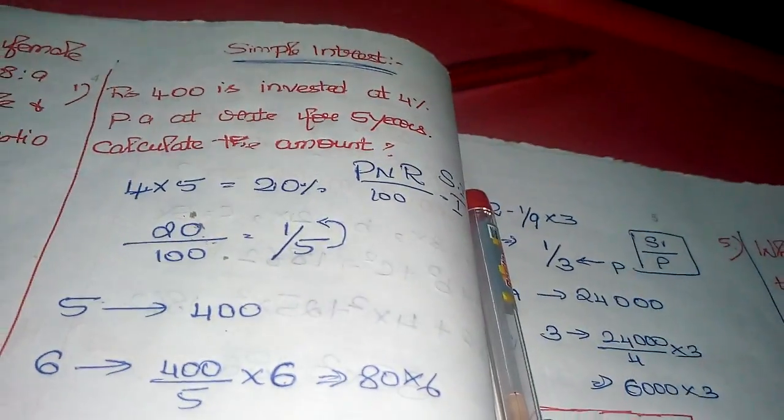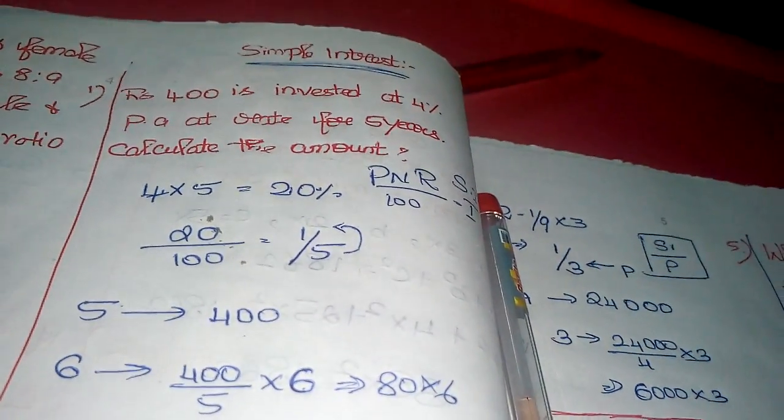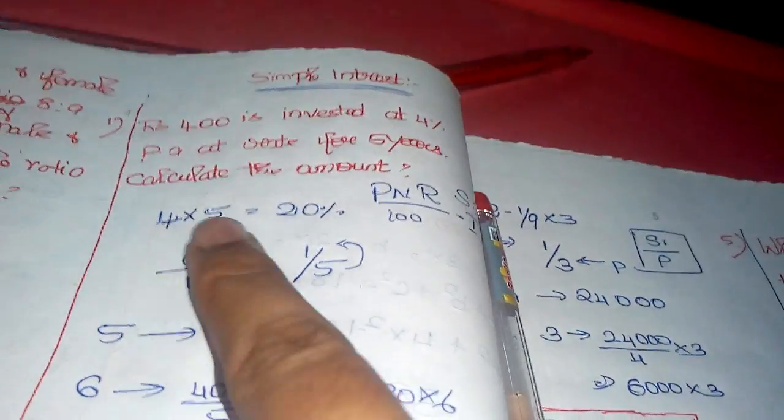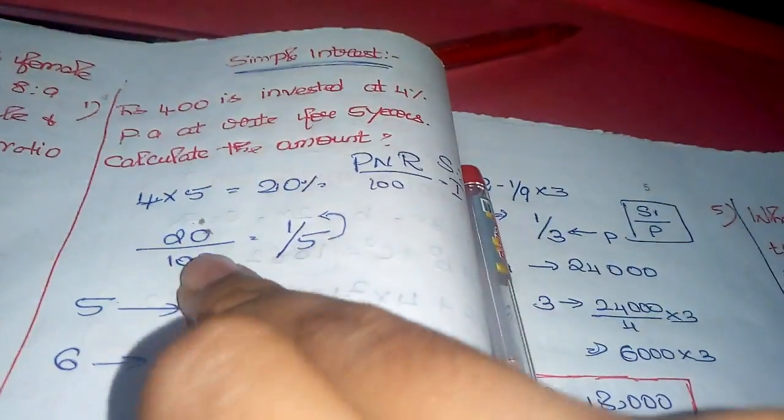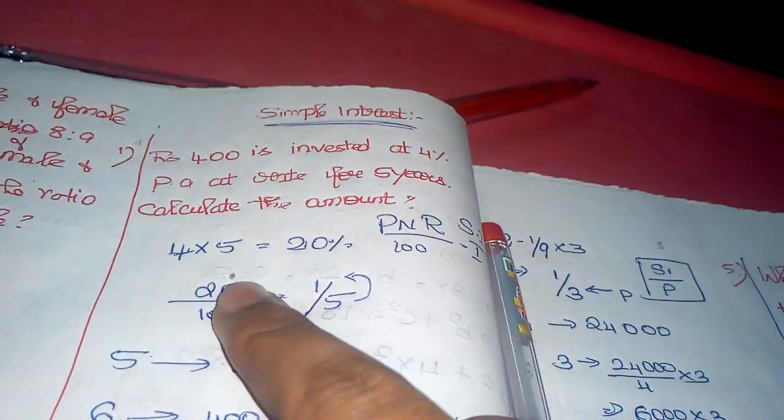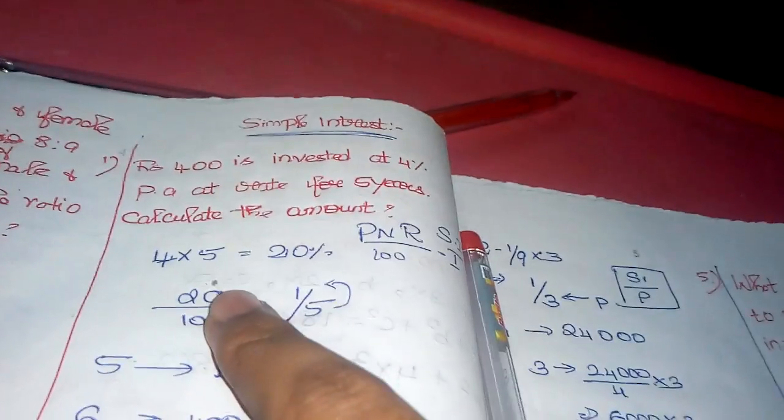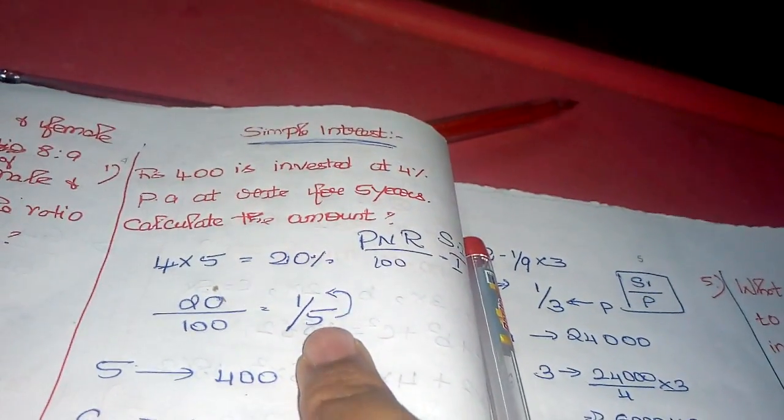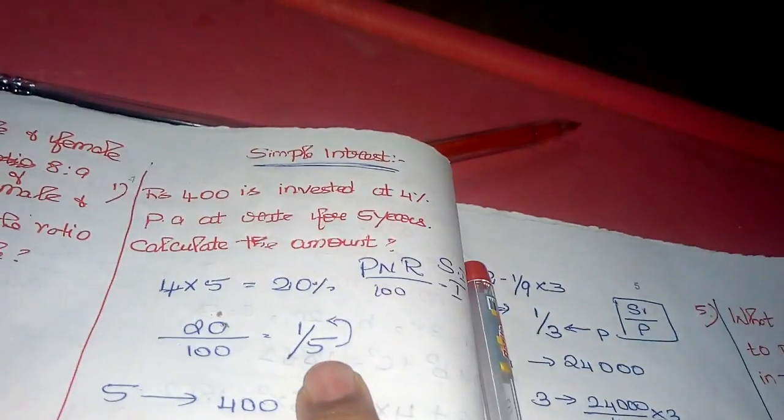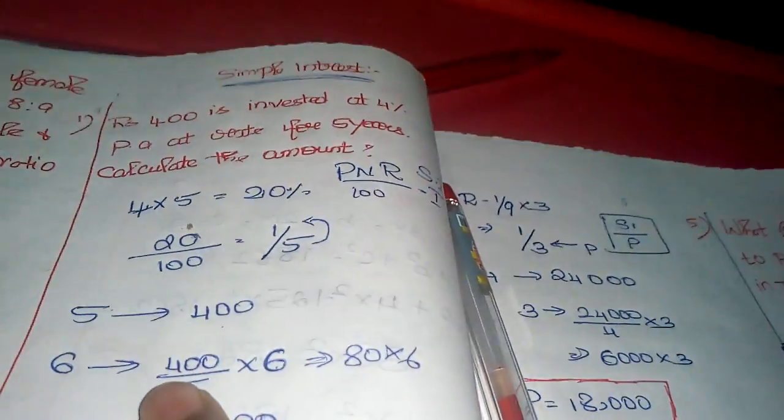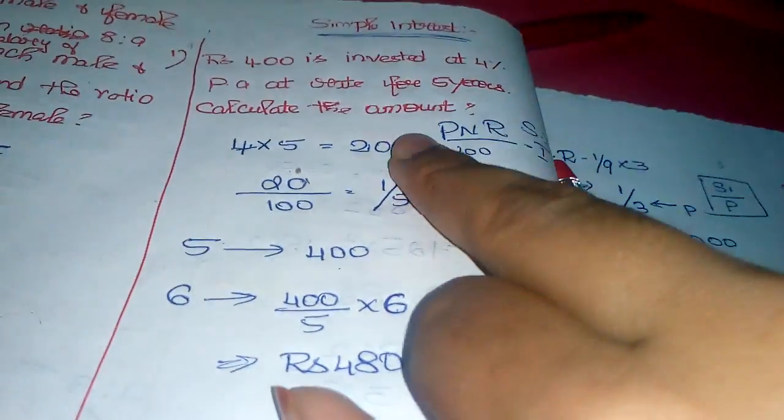In simple interest calculation, multiply rate of interest by time: 4 into 5 is 20 percentage, so 20 by 100. 100 rupees into the principle - principle is 20 parts. Simplifying: cancel to get one-fifth. One part is 20. Principle is 400, so 5 parts equal 400.